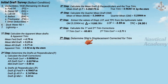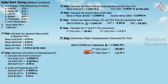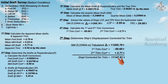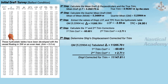Next, determine the ship's displacement corrected for trim. Apply the first and second trim corrections to the tabulated displacement of 11,205.70 tons — subtract the first trim correction (negative) and add the second trim correction (positive). The displacement corrected for trim is 11,147.81 tons. Trim corrections are necessary because the hydrostatic table was developed for the vessel floating in salt water on even keel. Since this vessel is trimmed by the stern, trim correction is required. This is the final displacement if the ship is floating in salt water; otherwise, a density correction is also needed.